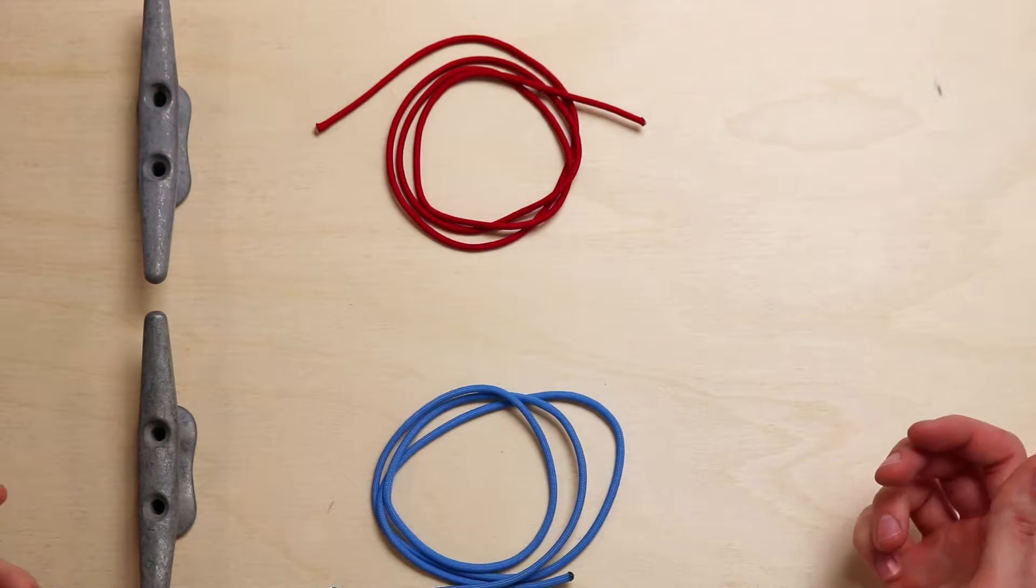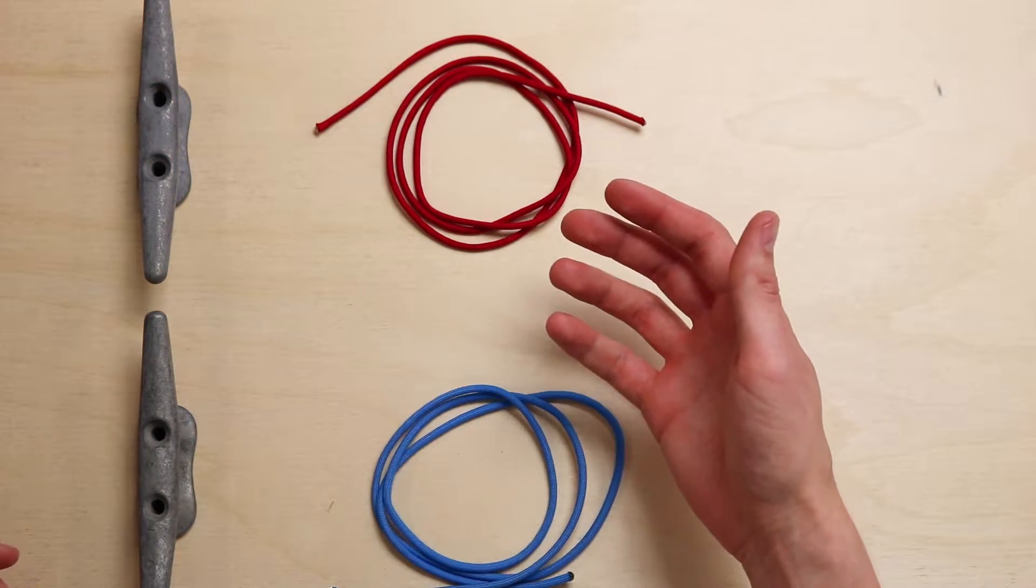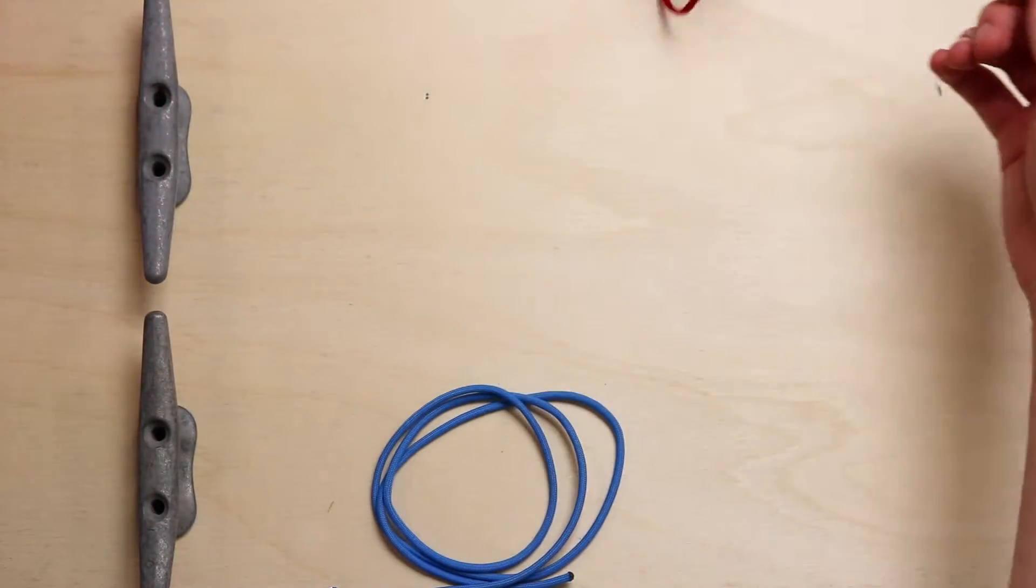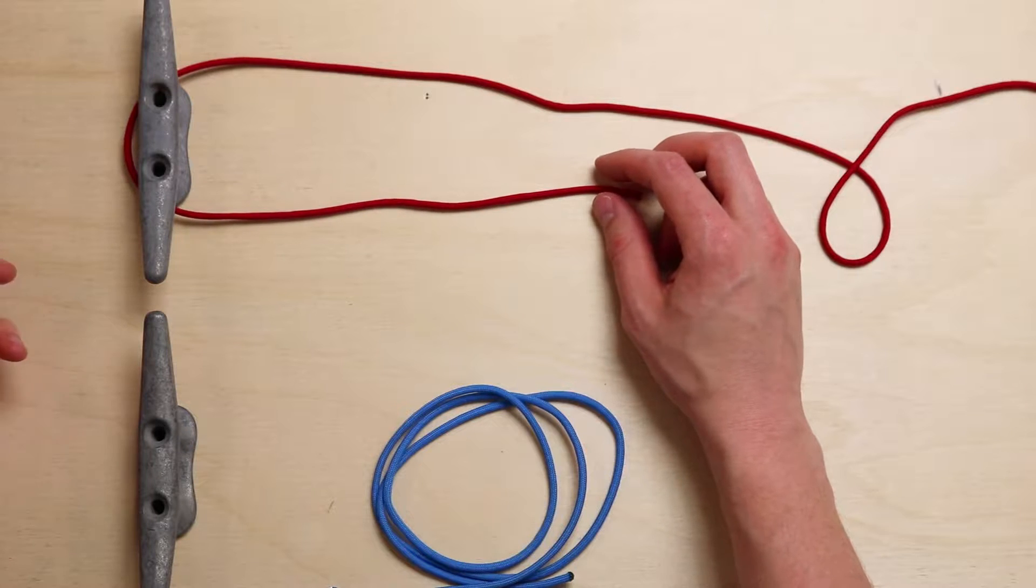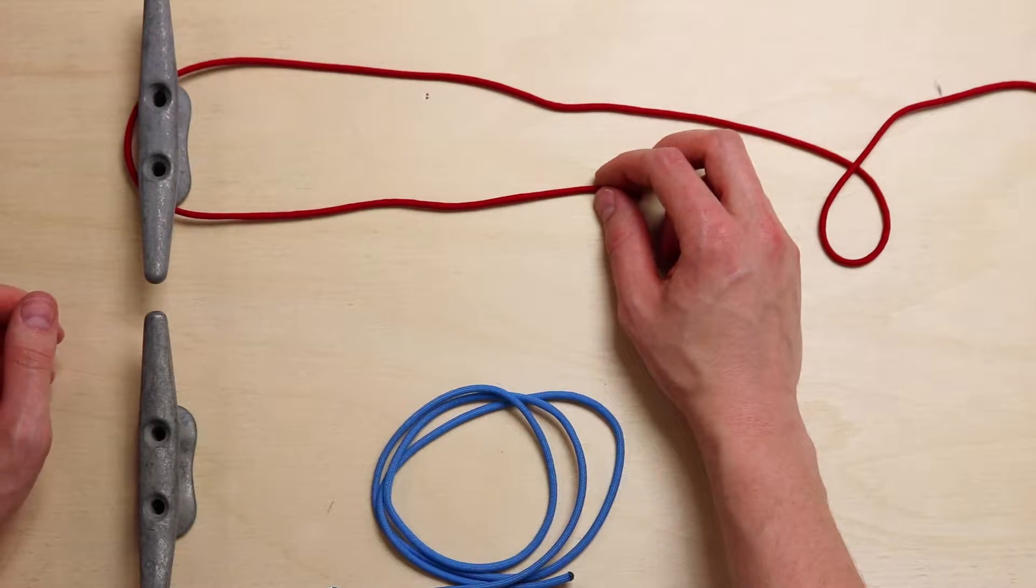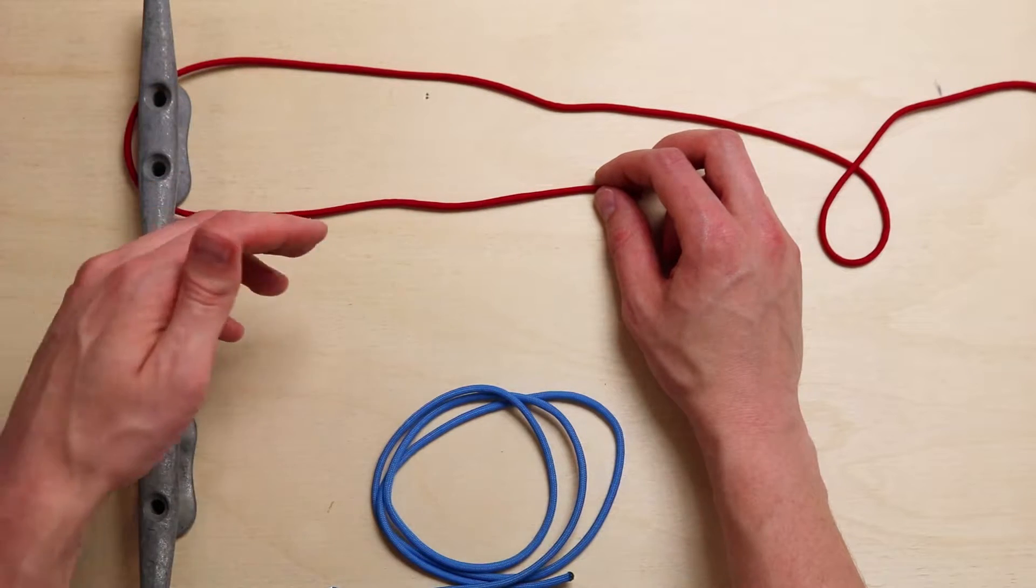So both of these are pretty straightforward. I'm going to start with the adjustable grip hitch, that's what it's called. We just begin by passing the line around a standing object. This one is not supposed to be used with wide objects, so even this is probably a little bit wider than ideal, but definitely don't do this around a tree or the rope is going to slip.